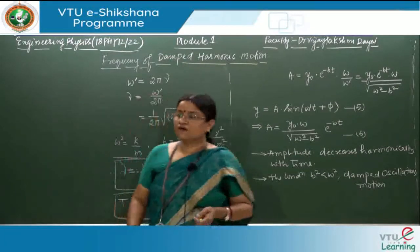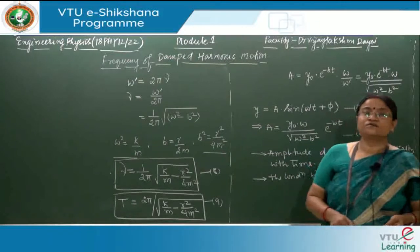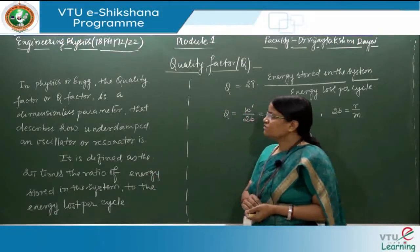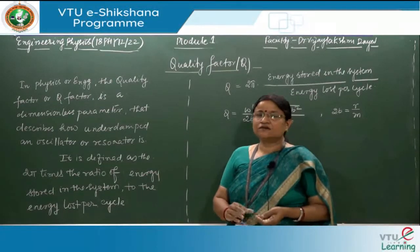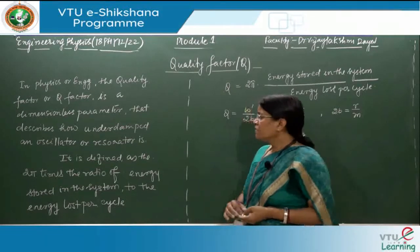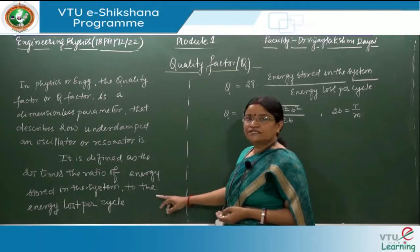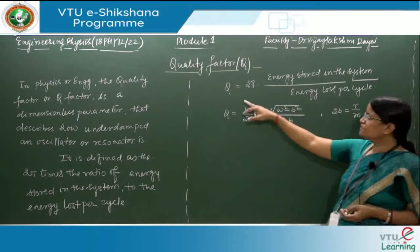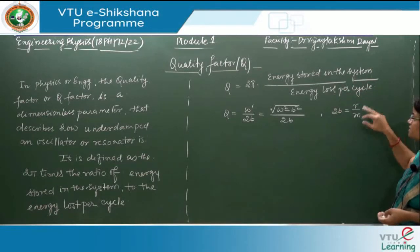We will use these two equations of frequency and time period for solving problems. Now let us discuss the quality factor. The quality factor, or Q factor, is a dimensionless parameter that describes how under-damped an oscillator or resonator is. It is defined as 2π times the ratio of energy stored in the system to the energy lost per cycle: Q = 2π × (energy stored)/(energy lost per cycle).